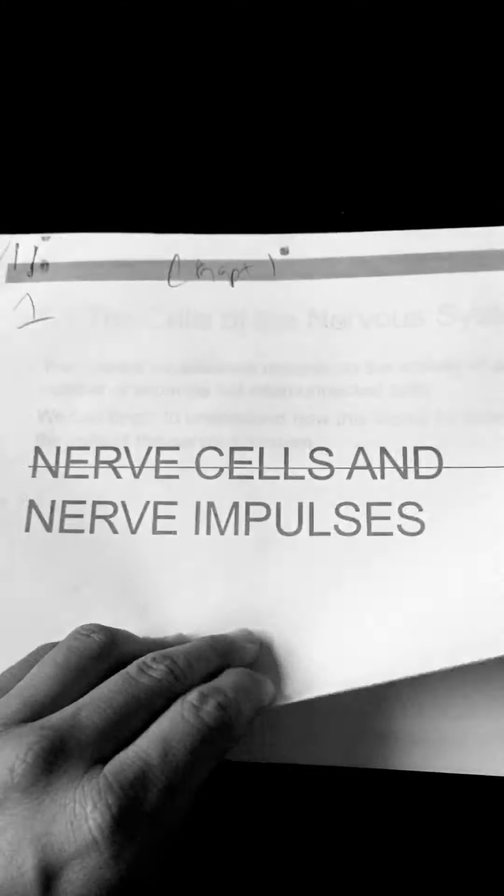Today I'm going to share Chapter 1 of Biological Psychology by James W. Kalat, 13th edition. Chapter 1: Nerve Cells and Nerve Impulses.